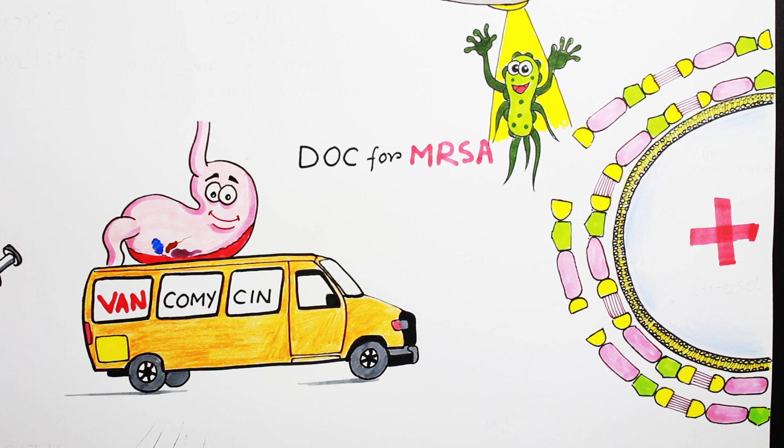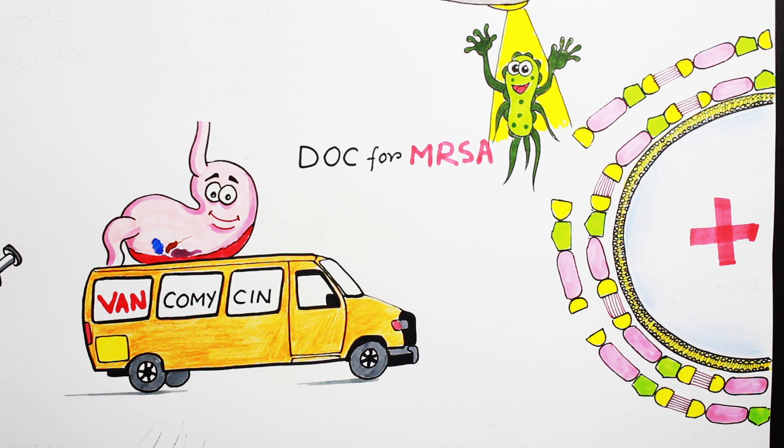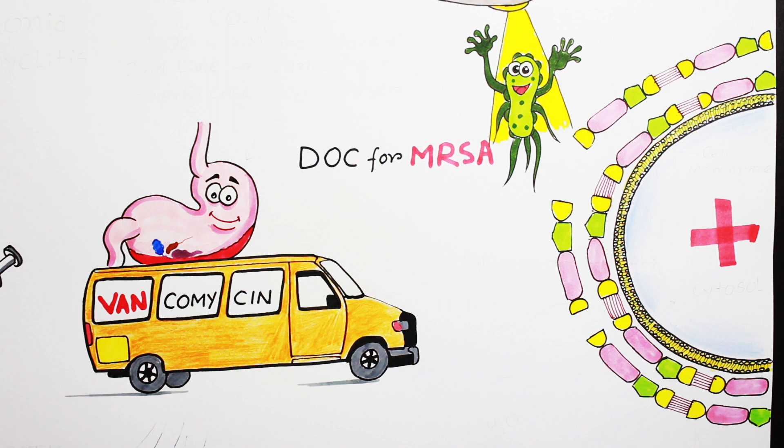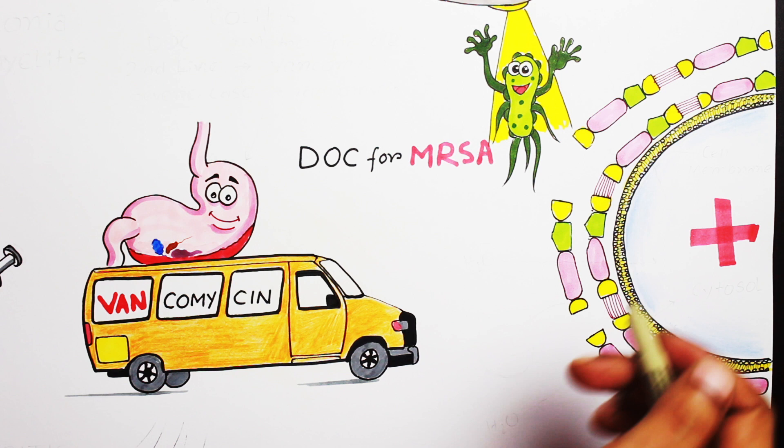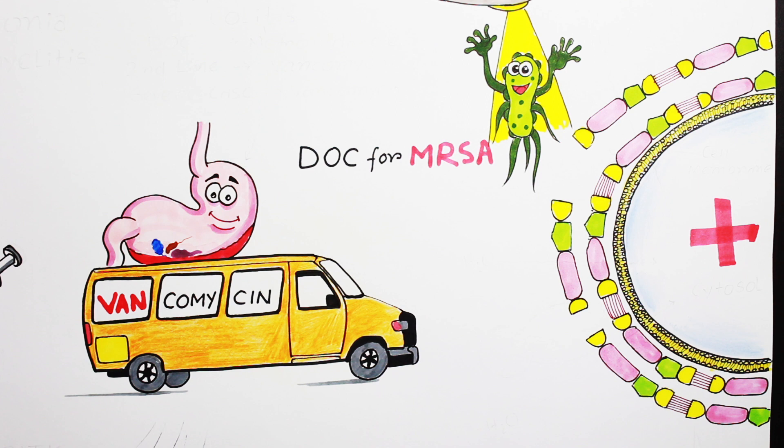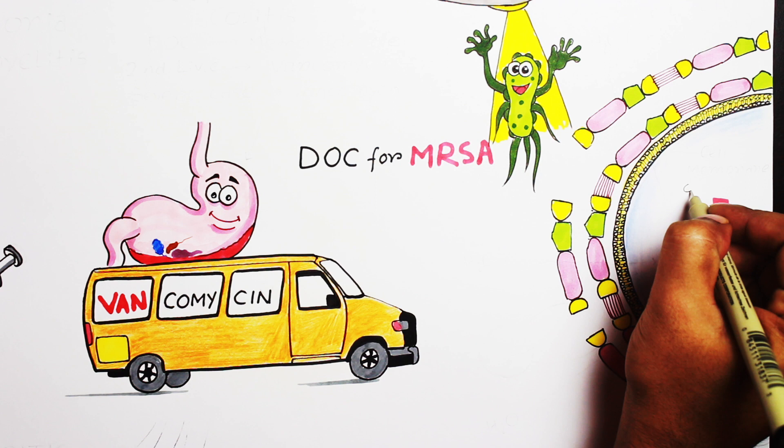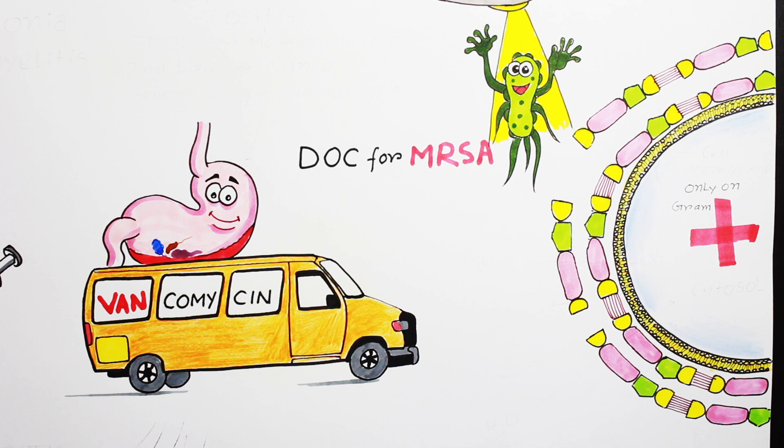Now here you can see I have enlarged a portion of bacteria. Before going to mechanism of action, here you can see I have put a positive sign because vancomycin only acts on gram-positive bacteria. I'm repeating: vancomycin only acts on gram-positive bacteria.